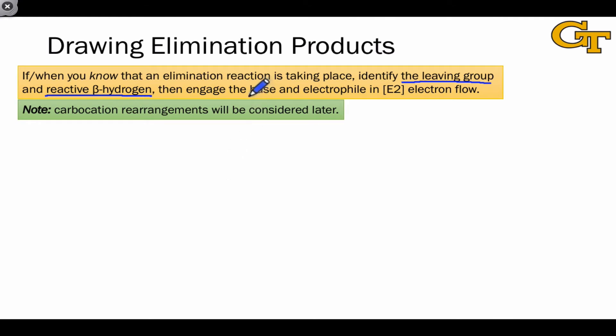First we identify the leaving group and the reactive beta hydrogen, applying the principles on the last slide. It's also important to identify the base at this point and then engage the base in electron flow associated with the E2 elementary step. We've looked at this step before, and the introductory video to this series showed E2 type electron flow. We're going to worry about the E1 mechanism and carbocation rearrangements in a later video. In this general scheme, for example, we recognize X, which is some electronegative halogen or pseudo-halide group, as the leaving group. To find the beta carbons, we move two carbons away from the leaving group and look for hydrogens linked to those carbons. Here's an example of the beta hydrogen.